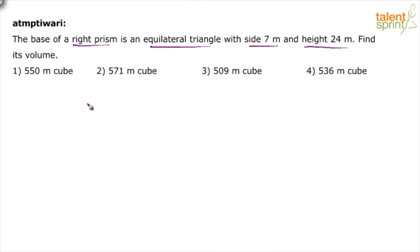You know how a prism looks like - the base is an equilateral triangle and then it is like this. So this is the base. Of course, I should have drawn it vertically. So this is the base which is an equilateral triangle of side 7 meters and the height, this height is 24, and the base is an equilateral triangle of side 7 meters.